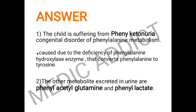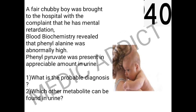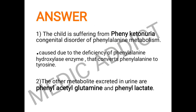The probable diagnosis is phenylketonuria (PKU), a congenital disorder of phenylalanine metabolism. Phenylalanine is abnormally high because, due to deficiency of the enzyme phenylalanine hydroxylase — which is important for conversion of phenylalanine to tyrosine — phenylalanine accumulates in the body. The other metabolites excreted in the urine include phenylacetylglutamine and phenyllactate.